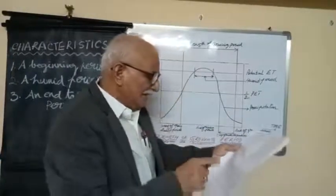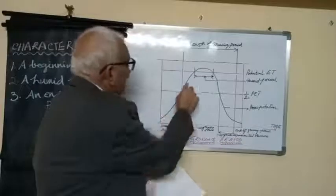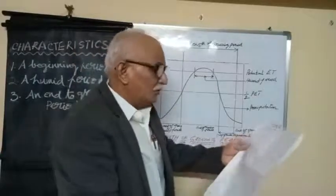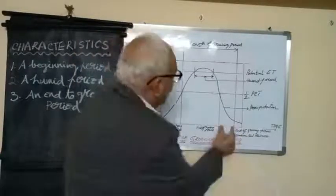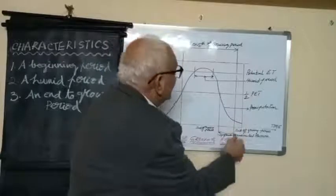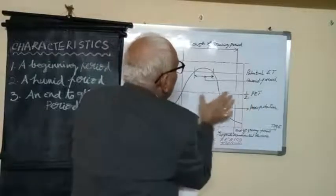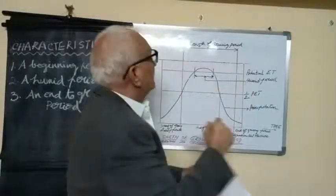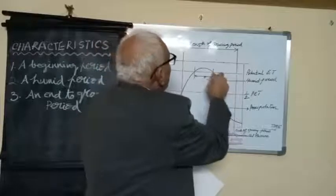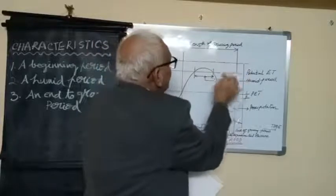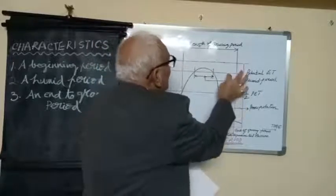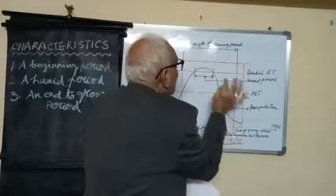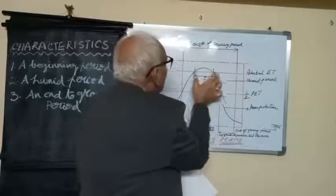In the calculation, precipitation plus soil moisture stored in the soil must exceed half of the potential evapotranspiration (PET). We identify the full PET line and the half PET line on the graph to determine the humidity period.